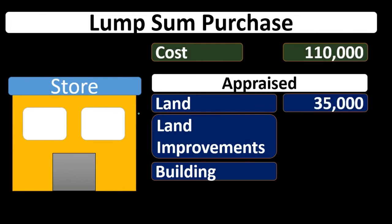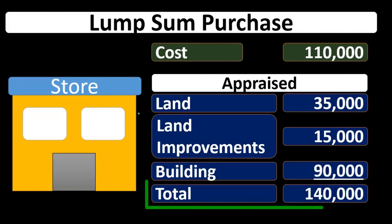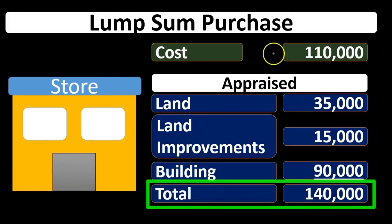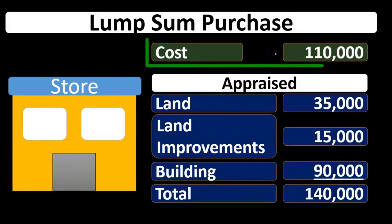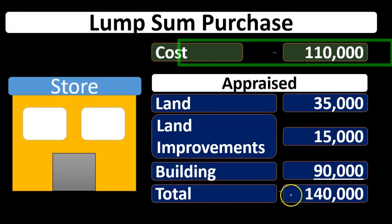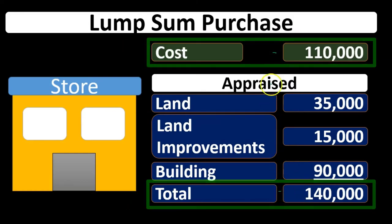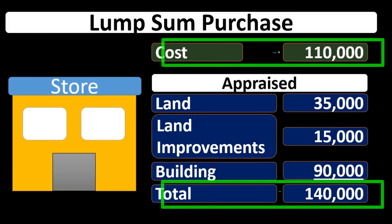So if we have an appraisal of $35,000 for the land, $15,000 for improvements, and $90,000 for the building, that totals up to $140,000 — which is of course different than the actual cost. The cost was only $110,000. So how can we use this $140,000 appraisal in order to allocate a different amount, $110,000?